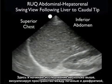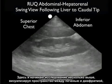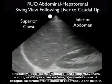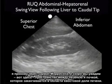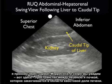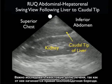Here's a swing view where I'm starting relatively superior, looking at the area between the diaphragm and the liver, going through Morrison's pouch, showing the area between the liver and the kidney, and terminating at the inferior tip of the liver. Notice the caudal tip of the liver extends almost all the way inferiorly down past the inferior pole of the kidney, and it's important to look at that caudal tip of the liver as it represents the beginning of the right pericolic gutter.